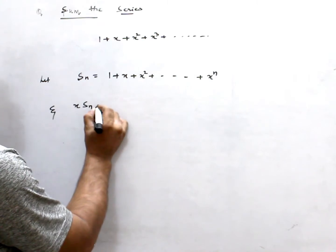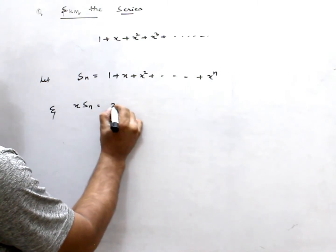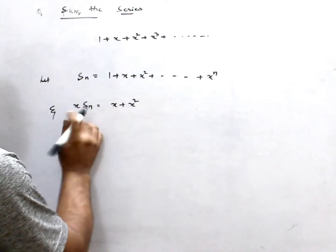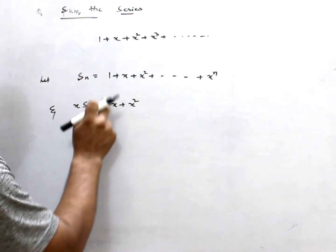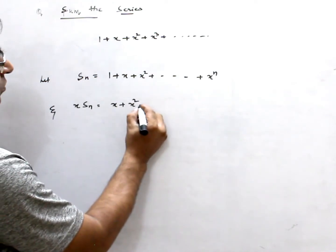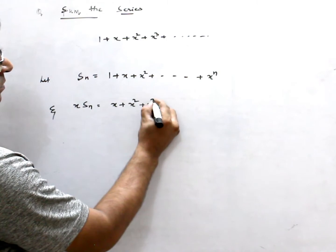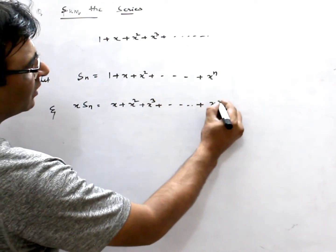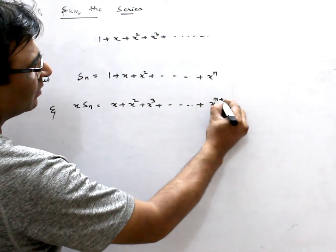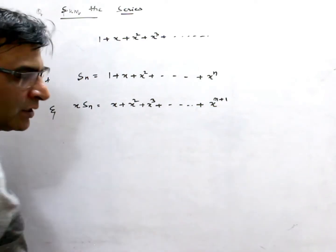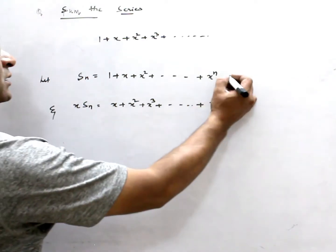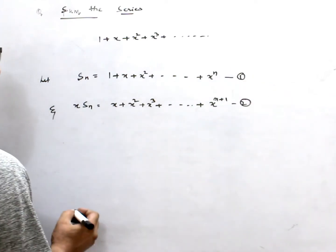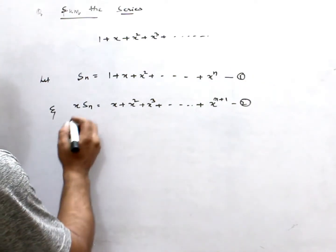x times Sn is equal to x plus x squared, because x is multiplied to each term, and the last one becomes x to the n plus 1. This is equation 1 and this is equation 2.